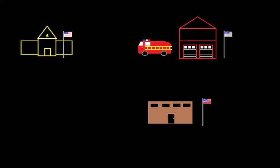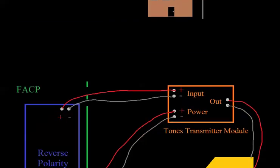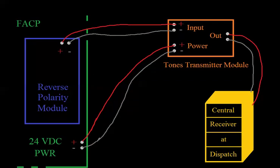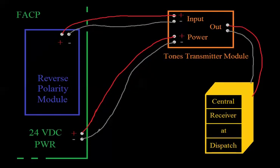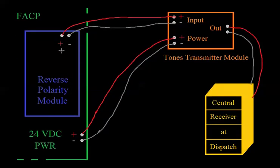And I mentioned that it's not used very commonly anymore. And one of the big problems with it was, if you remember, I said that in a normal state, the reverse polarity module, which is sent to the Tones transmitter module, would put out a positive 24 volts. And then in an alarm state, it would go negative.